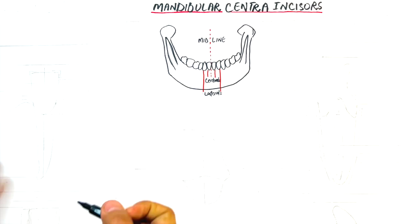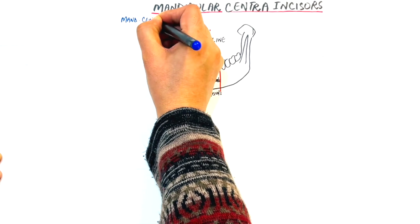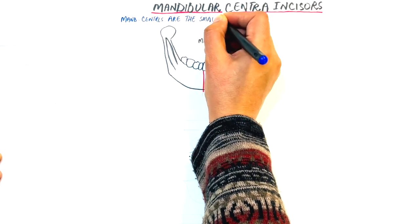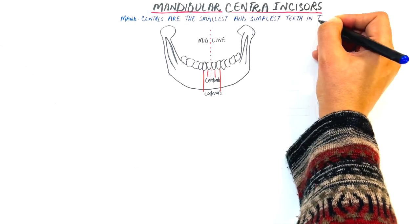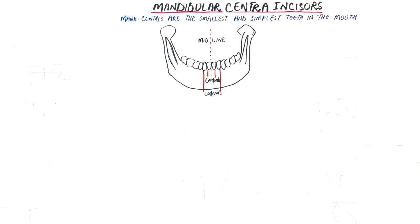Mandibular central incisors are the smallest and simplest teeth in the mouth. The central incisor is slightly smaller than the lateral incisor. Just like other anterior teeth in the mouth, mandibular central incisors have got four surfaces and an incisal edge. Let's talk about each surface of the tooth in some detail.